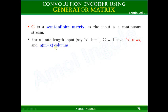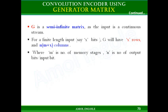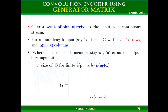The number of columns will be equal to N times (M plus X), where N is the number of output bits, M is the number of memory units, and X is the length of the input bits. So the size of the generator matrix will be X by N(M+X).